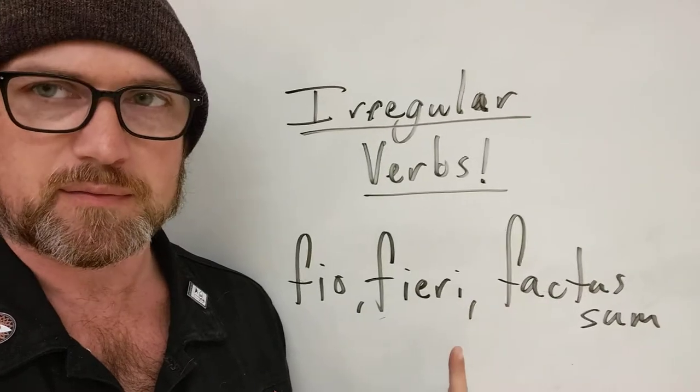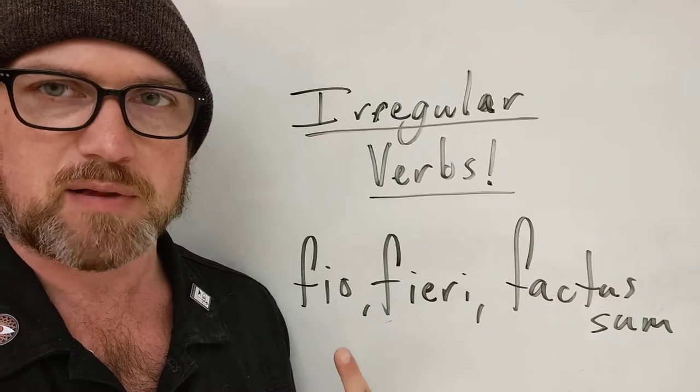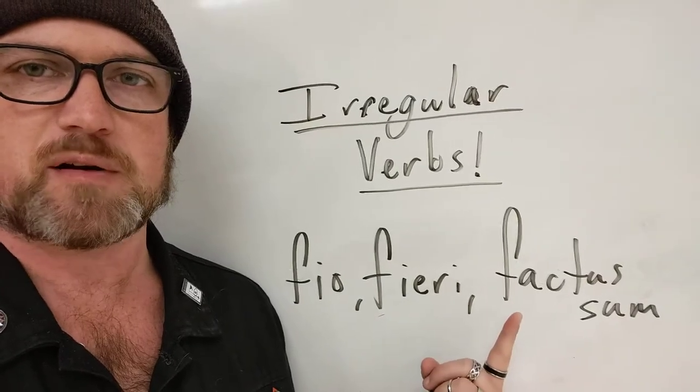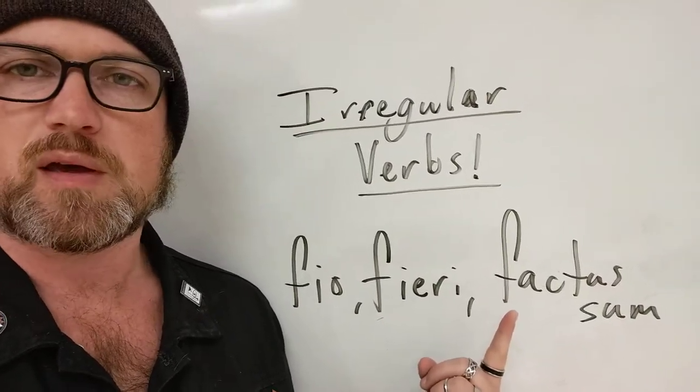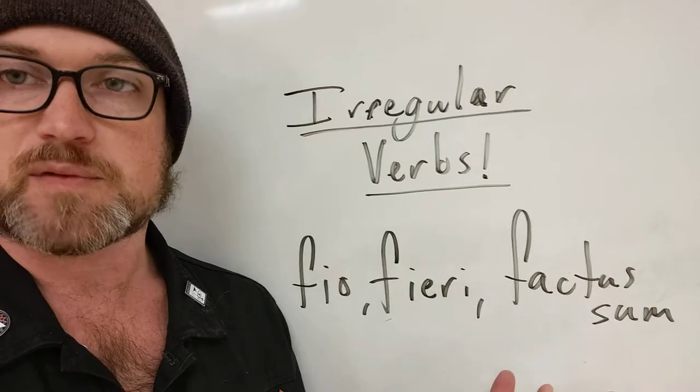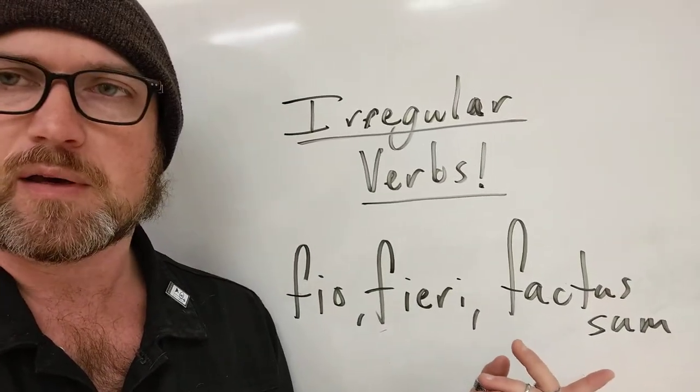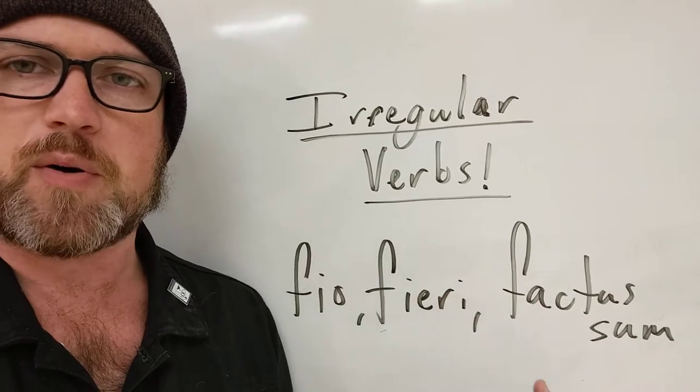Besides looking different from fio, it looks like it's passive. And then factus sum is our third principal part - we don't get a fourth. Factus sum is definitely passive. So when you look at this, if you know what deponent verbs are...